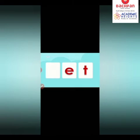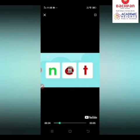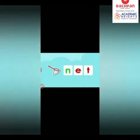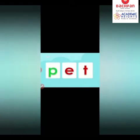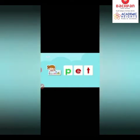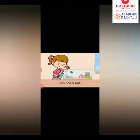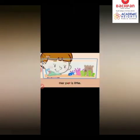E says E, T says T. N says N — ET — NET. J — ET — JET. WET. PET. Jan has a pet. Her pet is little. Her pet is blue.